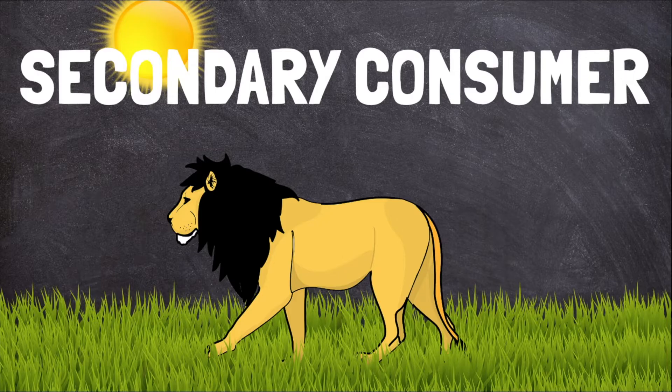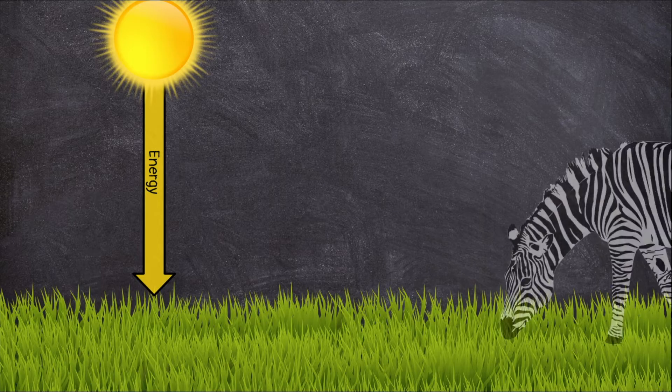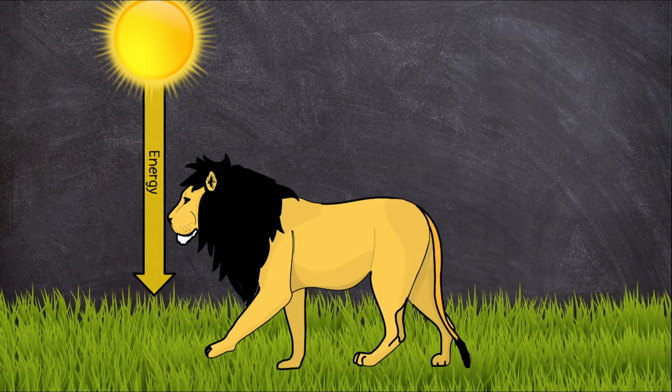In this simple food chain, the energy has passed from the sun, to the grass, to the zebra, and finally to the lion.